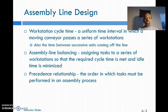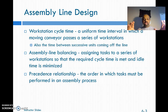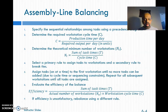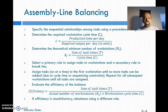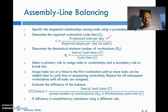To accomplish this, we're going to come up with a diagram where we look at the precedence relationship — that means the order in which tasks are going to be done. We use this order to build the diagram. Before we do the problem, let me go through some equations. The first is cycle time, which is the production time per day divided by the required output per day in units.